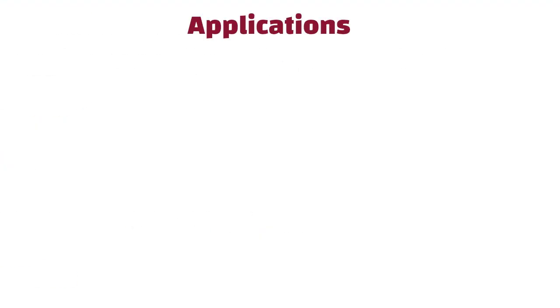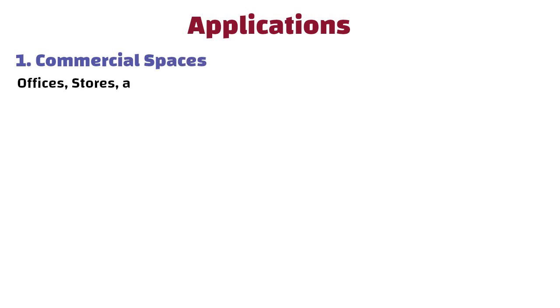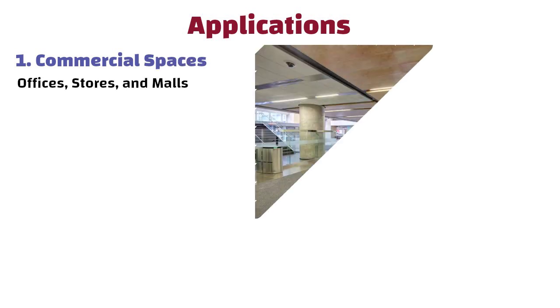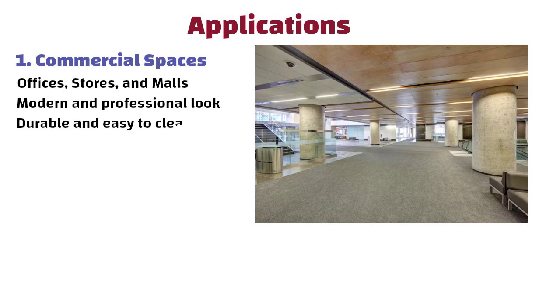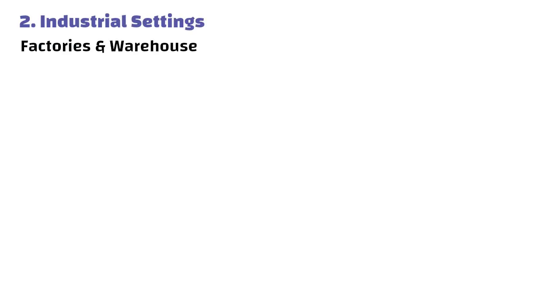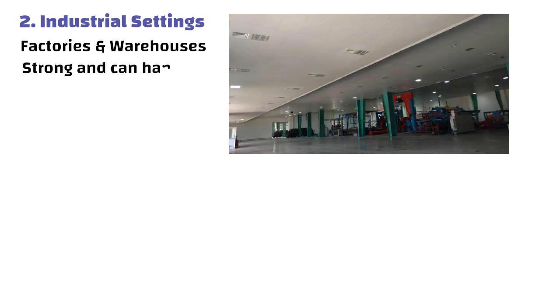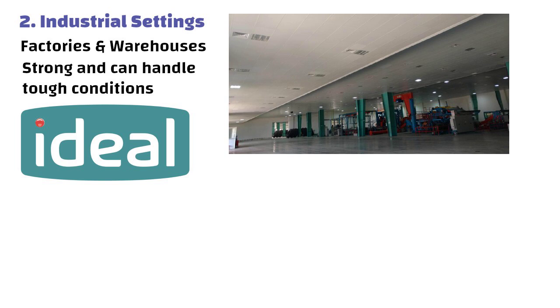Now let us understand its applications. First, Commercial spaces like offices, stores and malls. Metal ceilings give these areas a modern and professional look. They are durable and easy to clean, which is perfect for places with a lot of foot traffic. Second, Industrial settings like factories and warehouses. Metal ceilings are strong and can handle tough conditions, making them ideal for factories and warehouses where things can be rough.